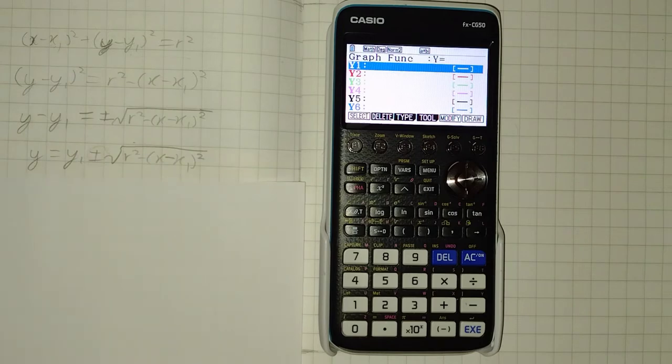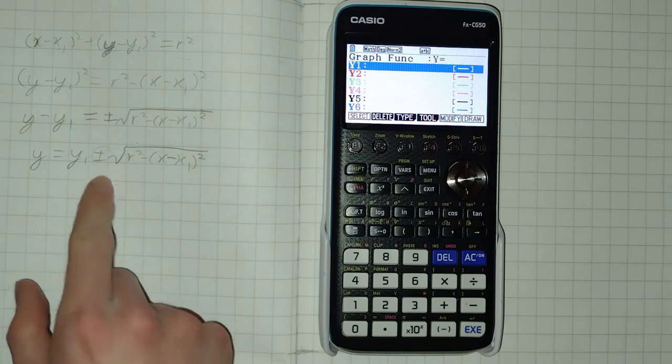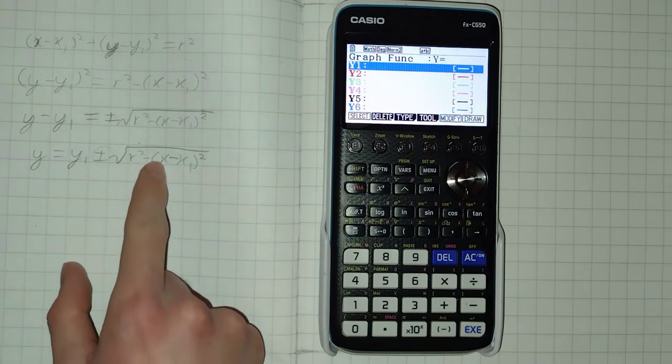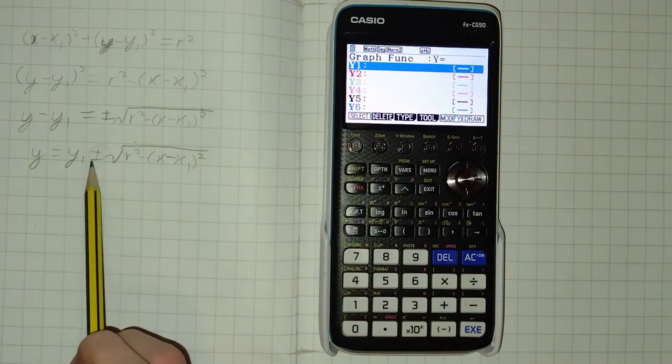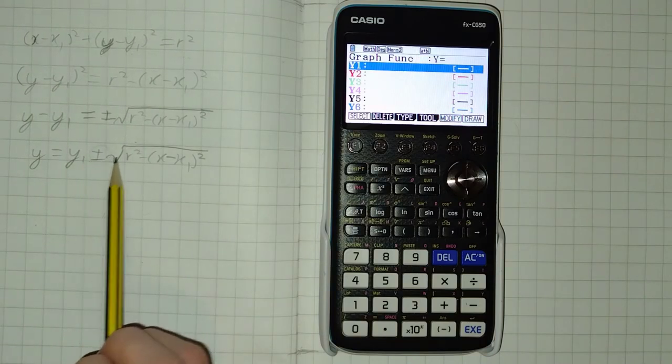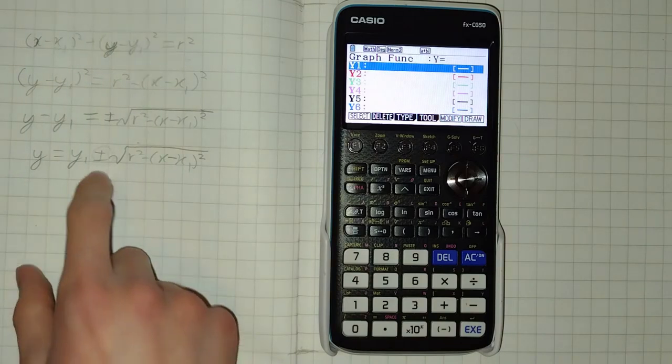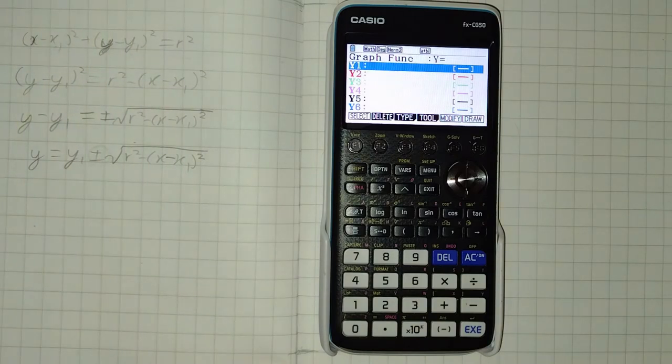We will then add y1 to both sides, leaving us with our final equation, y equals y1 plus or minus the square root of r squared subtract x subtract x1 squared. The problem is we can't plot using the plus or minus symbol here. We need to do it twice therefore, once with a positive root, once with a negative.